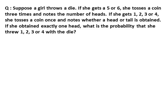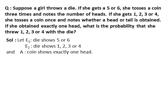Students, we need to find the probability that the die shows 1, 2, 3 or 4, given that the coin shows exactly 1 head, whether the coin is thrown 3 times or 1 time as per the condition. Let E1 be the event that the die shows 5 or 6, E2 be the event that the die shows 1, 2, 3 or 4, and A be the given event that the coin shows exactly 1 head.